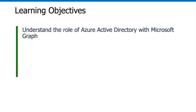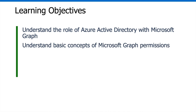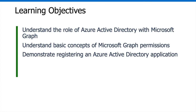The learning objectives for this module are the following. First, we're going to understand the role of Azure Active Directory with Microsoft Graph. We're going to understand the basic concepts around Microsoft Graph permissions — this is a really important aspect, because if you're going to pull a user's email, they need to consent to that. We'll also demonstrate registering an Azure Active Directory application, which will take us to the Azure portal.